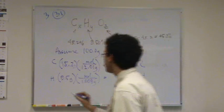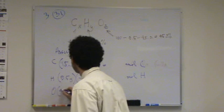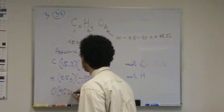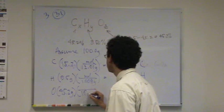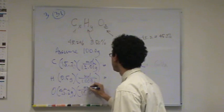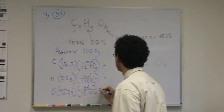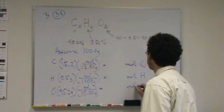Okay. And then, oxygen, same thing. 45.2 grams. And from the periodic table, it's about 16.00 grams per mole. And that's moles.